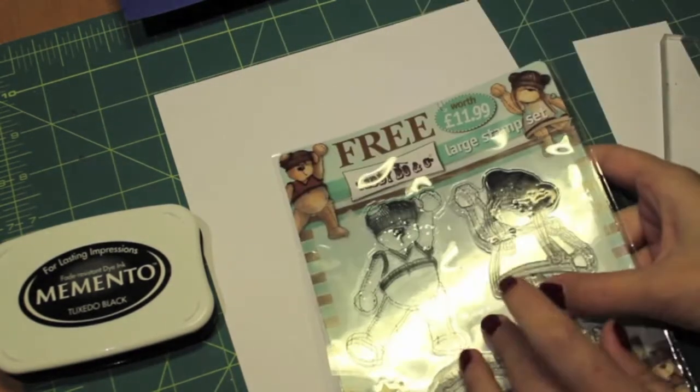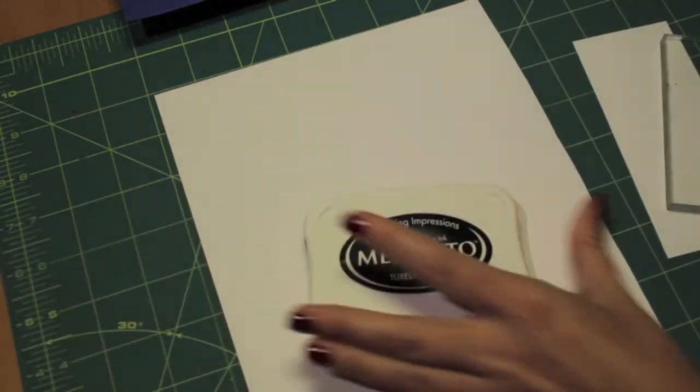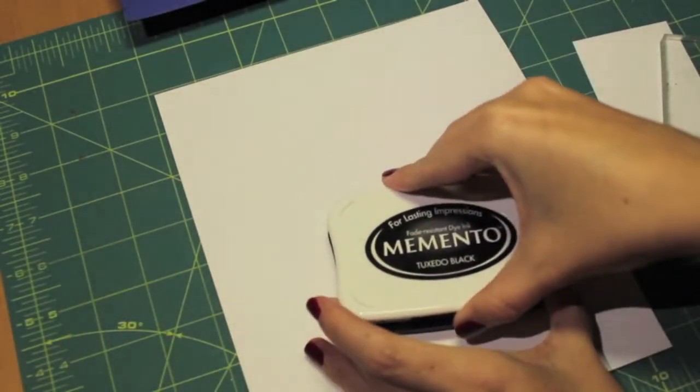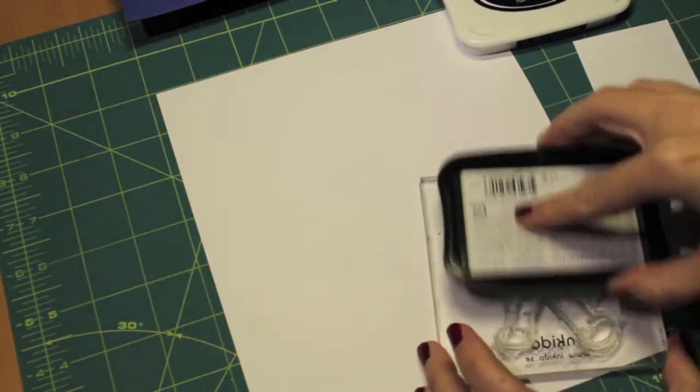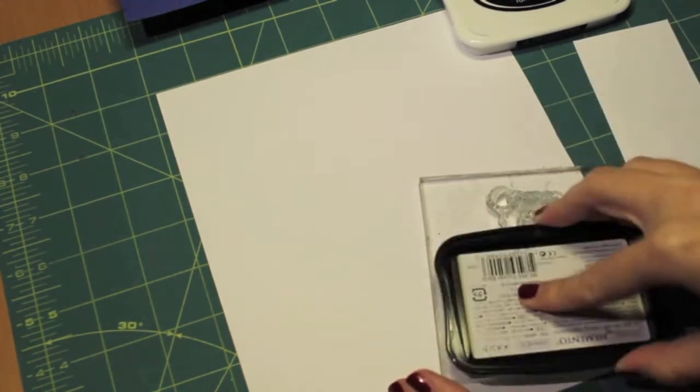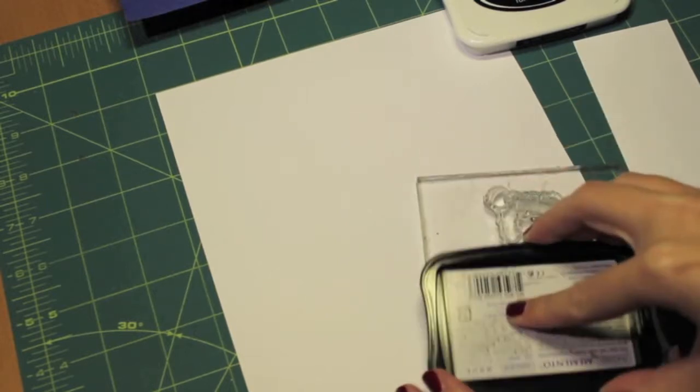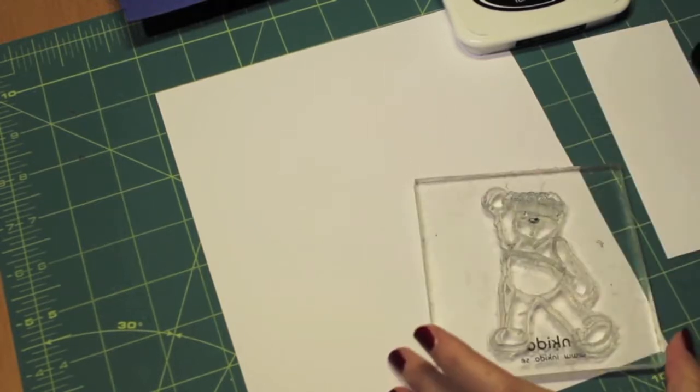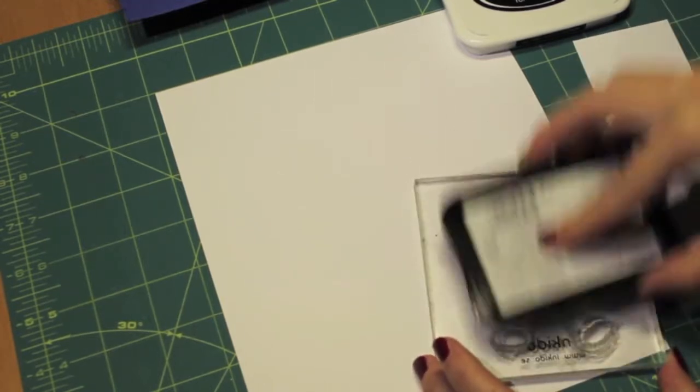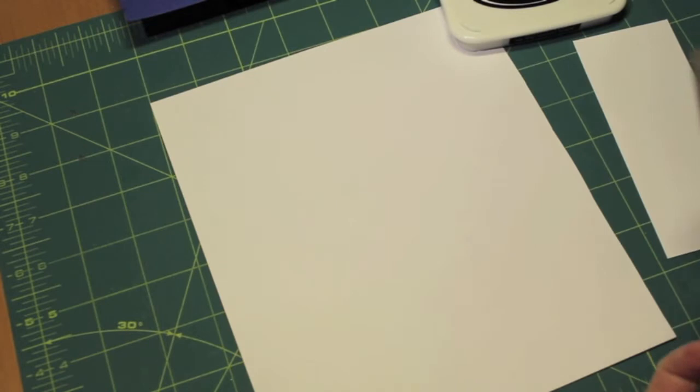And we're gonna stamp this in Momento Tuxedo Black. And then we are gonna color it with my Spectrum Noirs. First you just get the stamp all inked up. Inked up and then used.